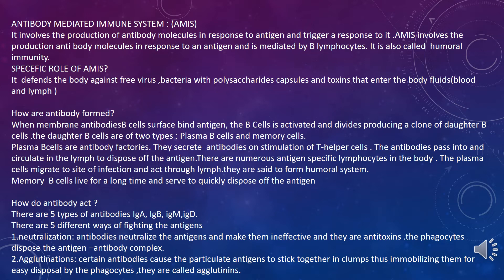Antibody mediated immune system (AMIS) involves the production of antibody molecules in response to antigens — as soon as antigen enters, antibodies begin to be produced and trigger a response. It is mediated by B lymphocytes and is also called humoral immunity. The specific role of AMIS is to defend the body against free viruses.